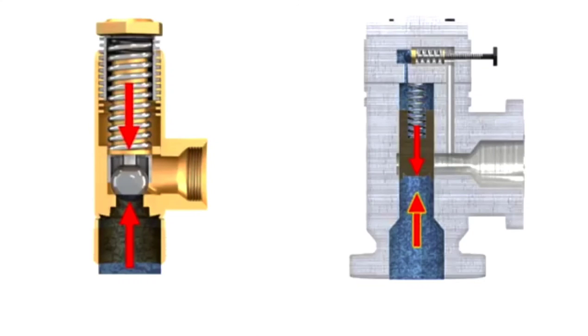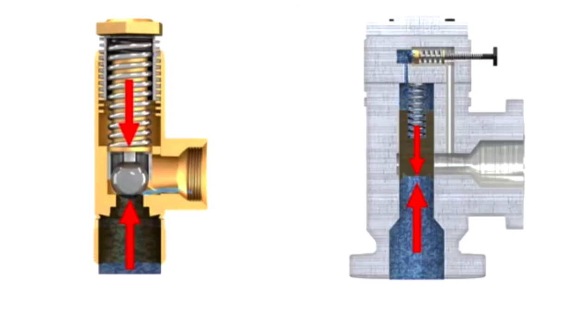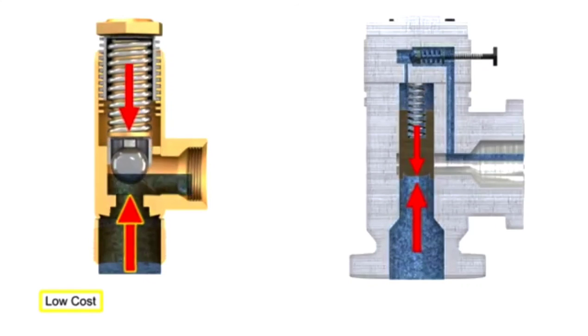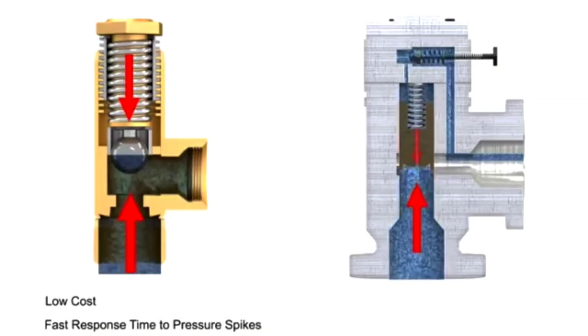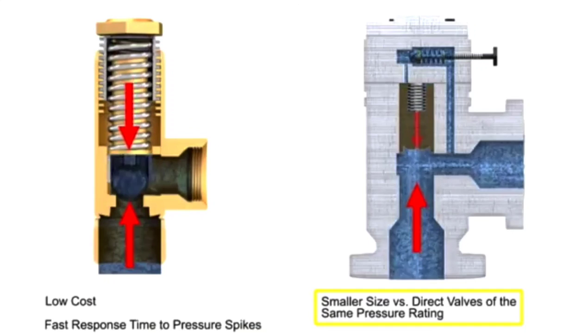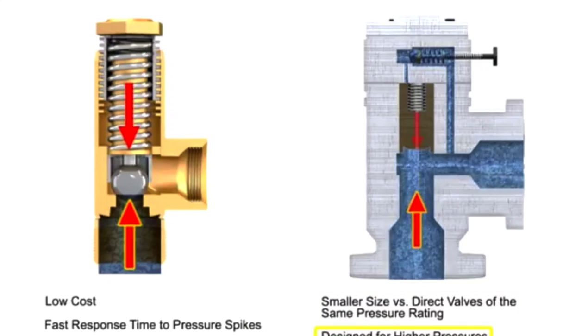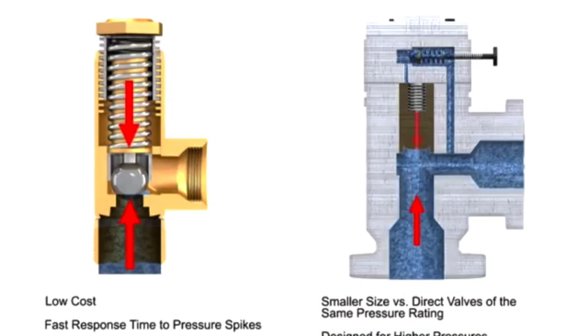Relief valves can be used anywhere in a hydraulic circuit where it is necessary to prevent pressure from exceeding a maximum level. Advantages of direct acting valves are their low cost and fast response times to pressure spikes. Pilot operated relief valves are advantageous due to their smaller size and ability to work with higher system pressures and higher flows.